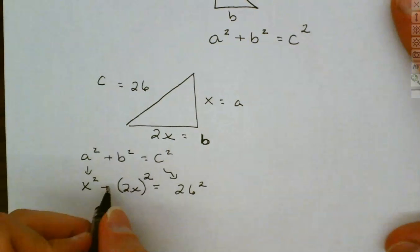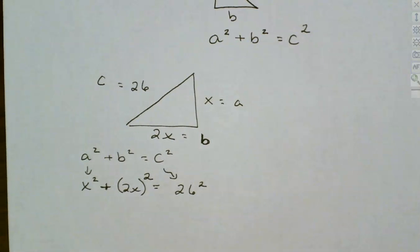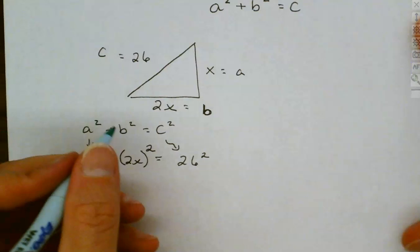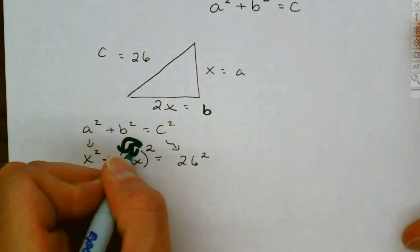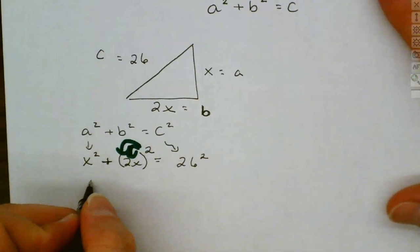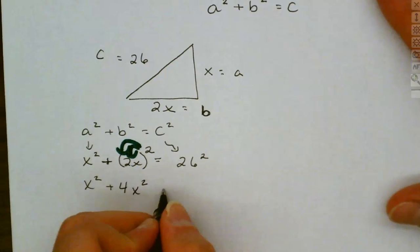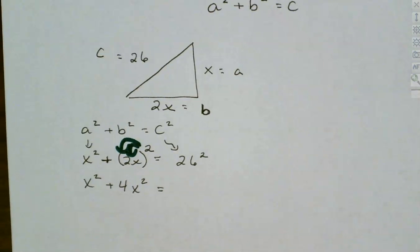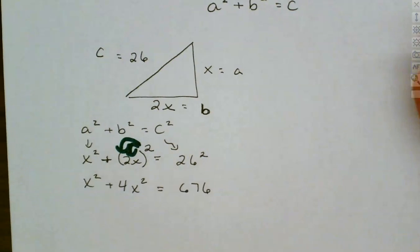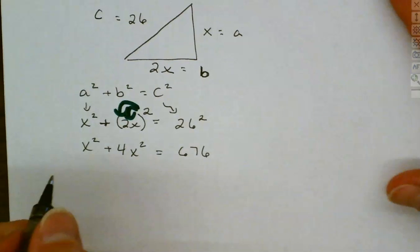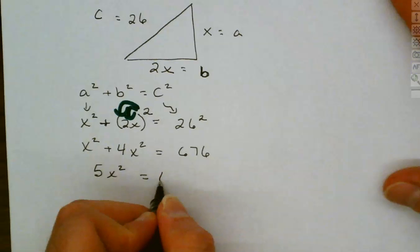Students typically make a mistake here: when you plug in b as 2x, you must put parentheses around it because the square has to go through. So squaring 2x: the x squared stays, and when you square the 2, it becomes 4x squared. Then 26 squared is 676. Now we can add the x squareds together and get 5x squared equals 676.